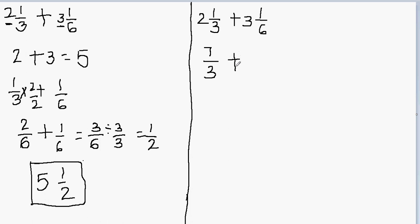Now I'll put the plus sign and convert the second mixed number into a fraction. Multiply the denominator with the whole part: 6 times 3 will be 18, and I add 18 to my numerator of 1. So 18 plus 1 will be 19, and the denominator still remains 6. So I have 7 over 3 plus 19 over 6. Again, we have different denominators.